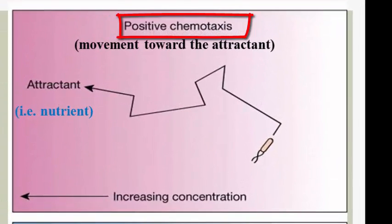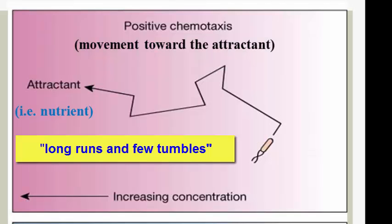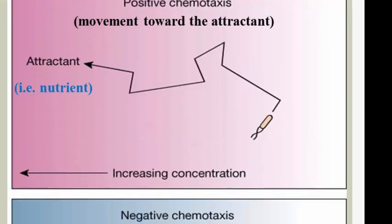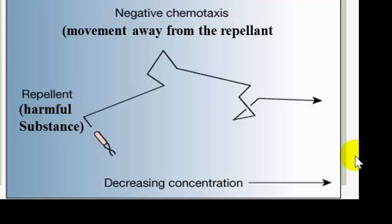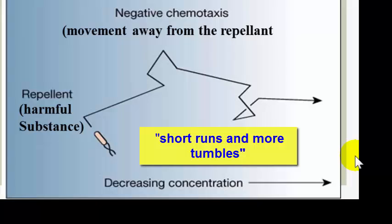In positive chemotaxis, or movement towards an attractant, the bacterium tends to lengthen its run and reduce the frequency of tumbling — resulting in long runs and few tumbles. On the other hand, in negative chemotaxis, or movement away from the repellant, the bacterium shortens its runs and increases the frequency of tumbling — resulting in short runs and many tumbles.